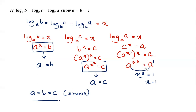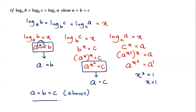From the third log I arrived at a^(x³) = a, where the bases are now equal, so x³ = 1 and x = 1. Substituting x = 1 gives a = b and a = c, so the final answer is a = b = c. Hope you understand this explanation — thank you, see you in the next video.